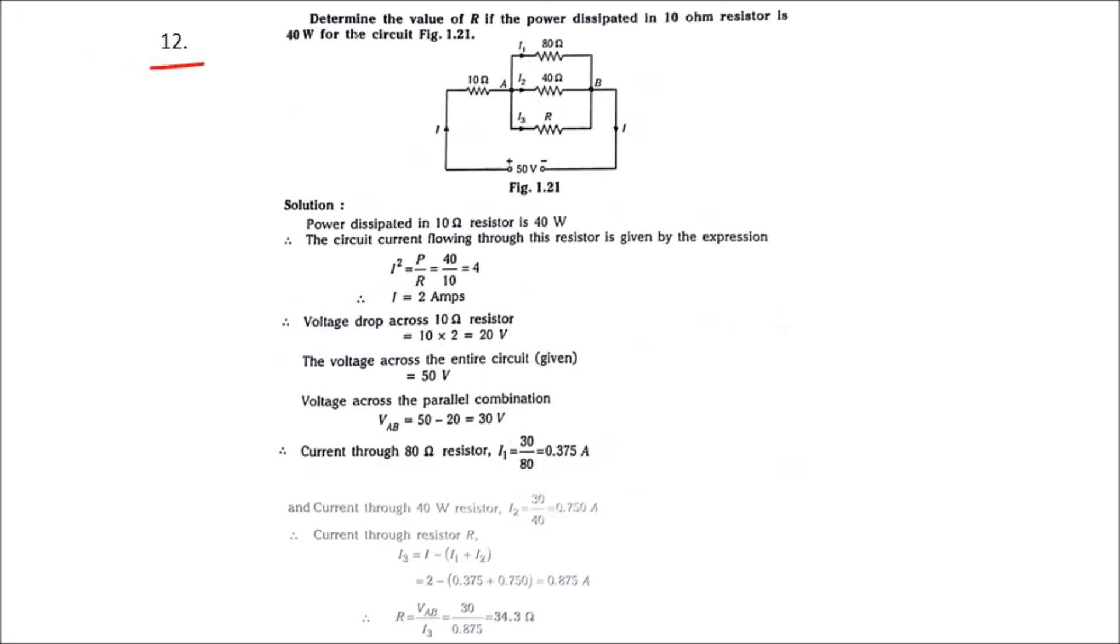Problem number 12: determine the value of R if the power dissipated in 10 ohm resistance is 40 Watt for the circuit shown in figure 1.21. This is the figure 1.21.